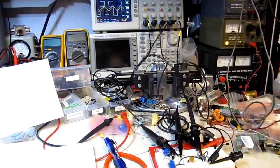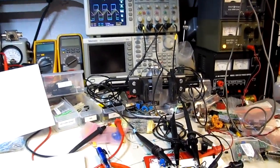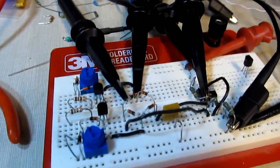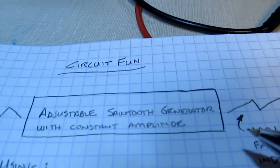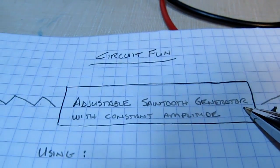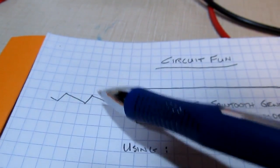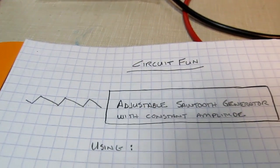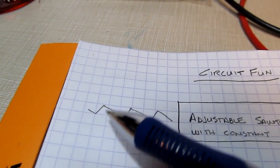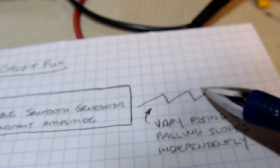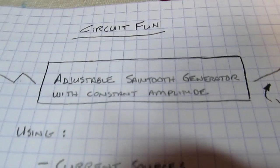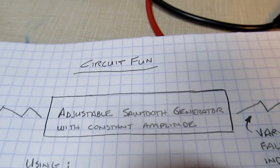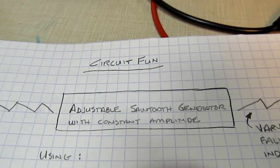In today's video we're going to have a little bit of fun with circuits. This circuit I built on the breadboard is in response to a question from a friend about how to build an adjustable sawtooth generator — a circuit that can generate a sawtooth waveform that can vary from a symmetrical triangle to something with a steep rising edge or a steep falling edge, while also varying the frequency while keeping the amplitude constant.